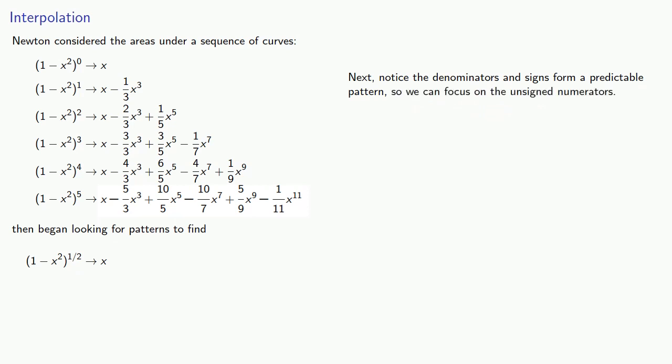So let's consider our numerators of the x³ terms of (1 - x²)^n. If n equals 0, there's no x³ term, so our numerator of the coefficient is 0. If n equals 1, our numerator is 1. If n equals 2, our numerator is 2.